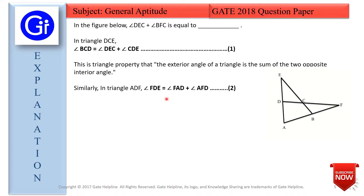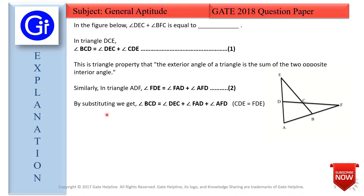Similarly, in triangle ABF: if we extend this side, the exterior angle will be this one and the interior angles will be the opposite ones, that is A and F. The exterior angle is D and the interior angles are A and F. So angle FDE equals angle FAD plus angle AFD — angle A plus angle F equals angle D.